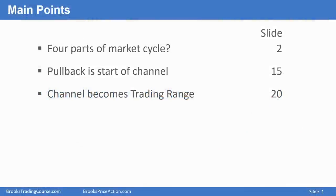I'll begin by talking about the four parts of the market cycle. Next I'll talk about how a breakout transitions into a channel, and the transition begins with a pullback. And finally I'll talk about how a channel evolves into a trading range.